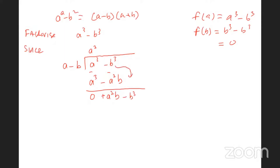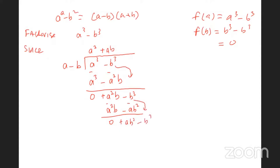Next step: a into a squared b gives ab. Then ab times a is a squared b, and ab times (minus b) is minus ab squared. Applying the minus sign: a squared b minus a squared b is zero, and minus minus gives plus ab squared. Bring down minus b cubed.